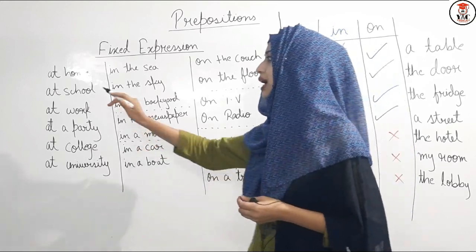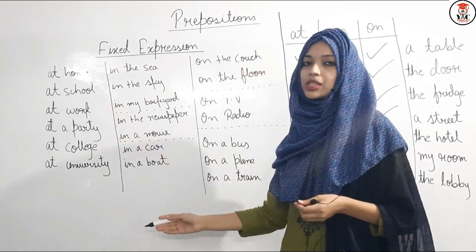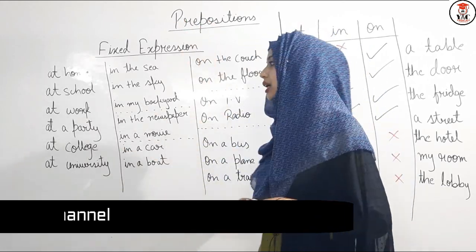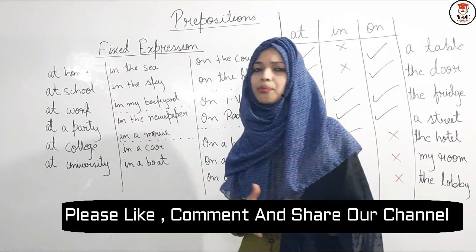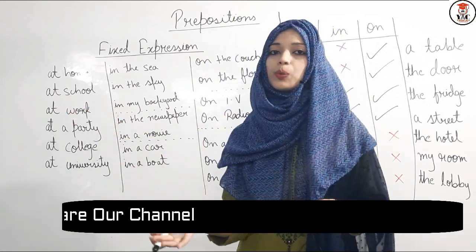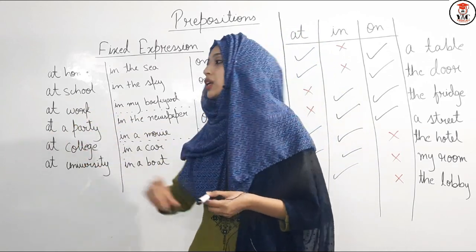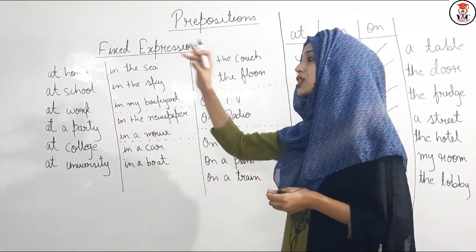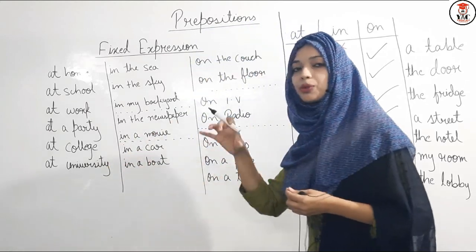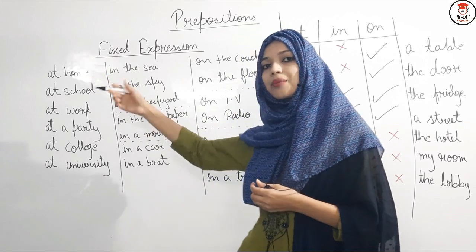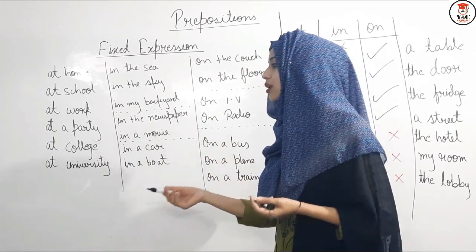Fixed expressions with AT: at home, at school, at work, at a party, at college, at university. Whenever we use these in a sentence, we use AT — not ON. For example, if someone asks where you are and you say 'I am at work,' you use AT. Students often mistakenly say 'on work' instead of 'at work.' You need to learn and practice these expressions.